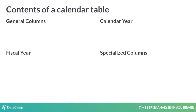A calendar table can hold lots of interesting data and can be broken down into categories. First, we have general columns, including columns like the date, day name, and whether the day is a weekend.